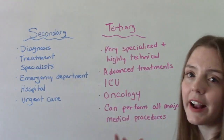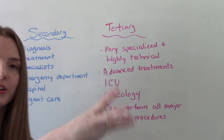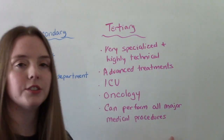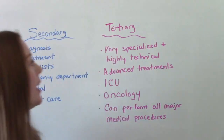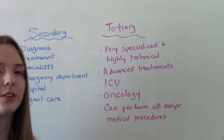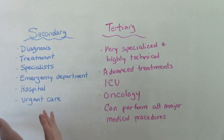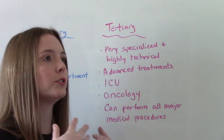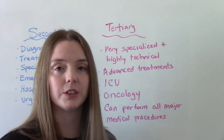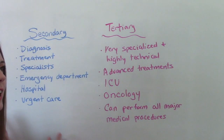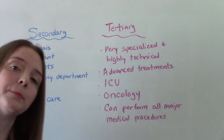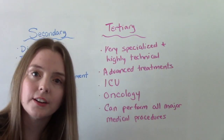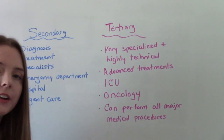After secondary, now we have tertiary — our third level. Everything that the secondary level can do, tertiary can do, plus a little bit more. This is very specialized and highly technical care. They can treat and diagnose, but they're going to do so in a more advanced way, using more technology, able to do more procedures, more surgeries — things a little bit beyond what the secondary level can do. Some examples of this would be the ICU, the intensive care unit, or an oncology center. These are some examples of a tertiary level of healthcare.